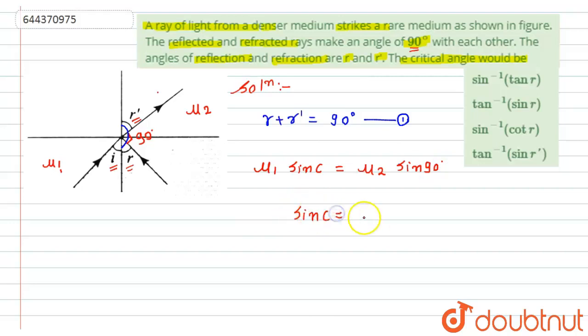Now here to find the critical angle I need to find μ₂ by μ₁. So to find the ratio of μ₂ by μ₁ we will use Snell's law.